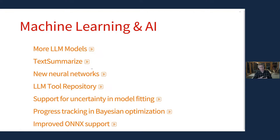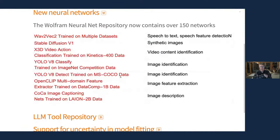In more traditional machine learning, we have the neural net repository — a repo where you can automatically download pre-trained neural networks for immediate use, retraining, or repurposing using the neural net framework. That's now at 150 models. Some of the newly added ones do things like image description — not just 'it's a tiger' but full content description like 'a tiger with a happy look on its face in front of some green leaves by a path.' There's also video content identification and a synthetic image generator where you say what image you want and it imagines one for you.